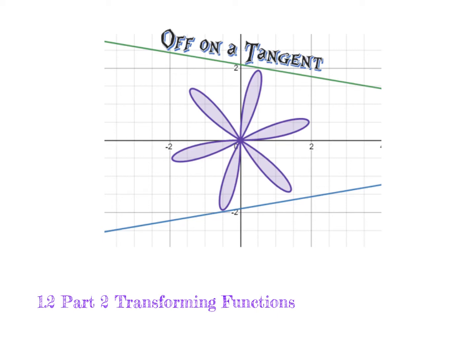Hello and welcome. In this video, we're going to talk about how to perform transformations on functions that are not necessarily parent functions. In 1.2 part one, we focused on how to apply transformations on parent functions, how to write it in function notation, and how to apply that to a particular function. We talked about the importance of the order that we list transformations in, so that we can identify if we have a 'followed by' situation where that order is going to be impacted.